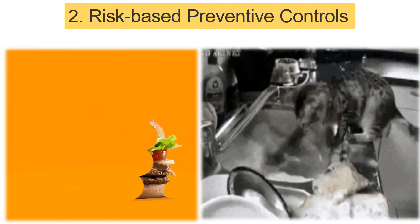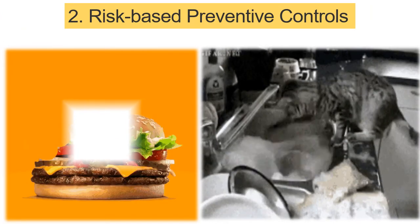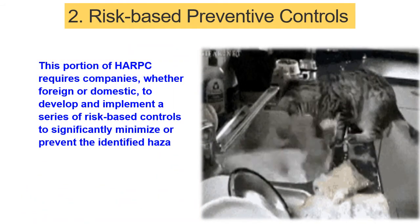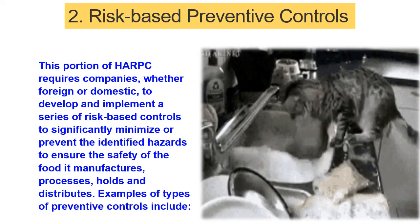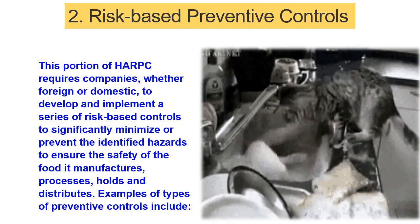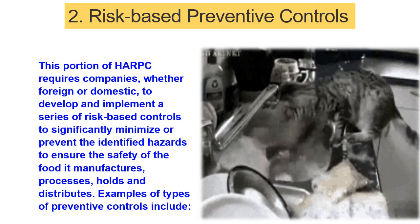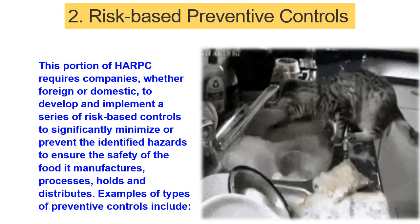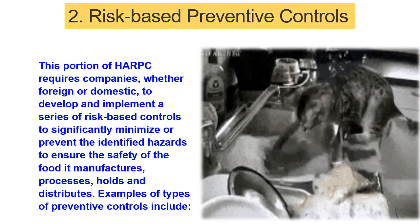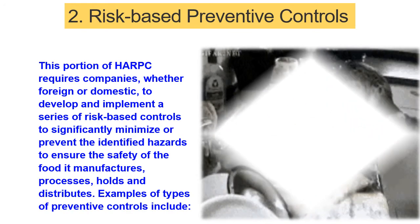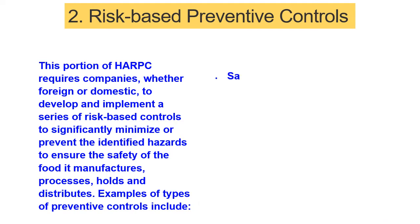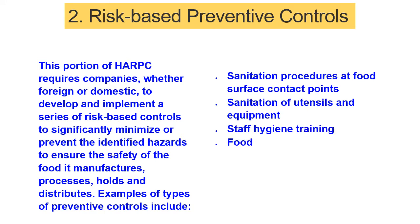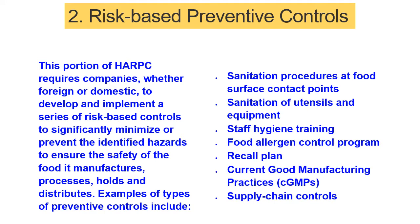Step 2: Risk-Based Preventive Controls. The RPC in HARPC stands for Risk-Based Preventive Controls. This portion of HARPC requires companies, whether foreign or domestic, to develop and implement a series of risk-based controls to significantly minimize or prevent the identified hazards and ensure the safety of the food they manufacture, process, hold, and distribute. Examples of preventive controls include sanitation procedures at food surface contact points, sanitation of utensils and equipment, staff hygiene training, food allergen control program, recall plan, current good manufacturing practices, and supply chain controls.